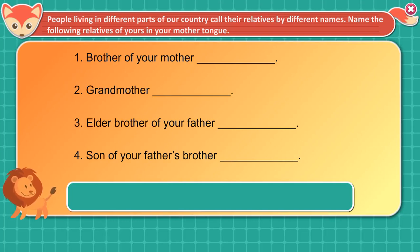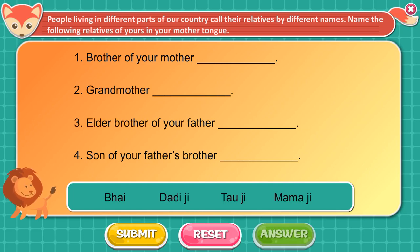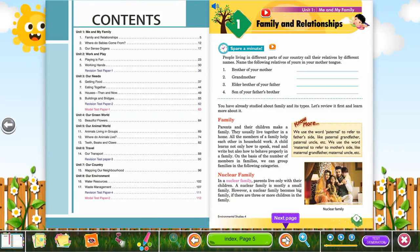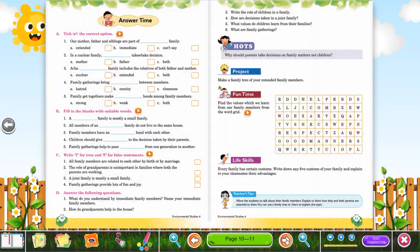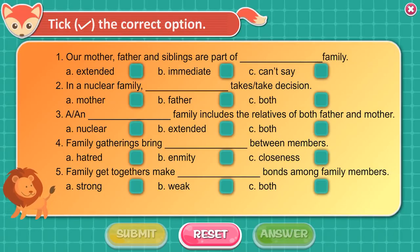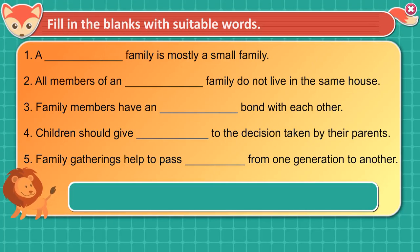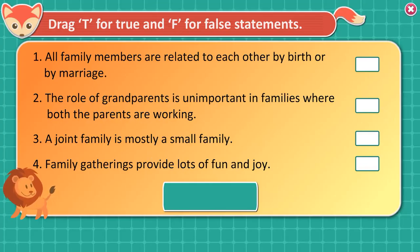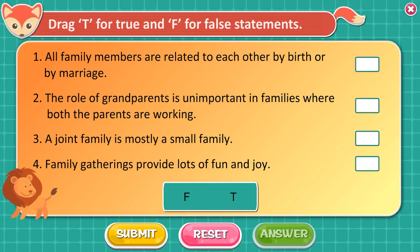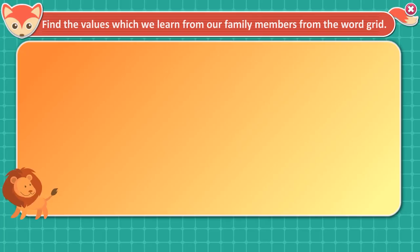People living in different parts of our country call their relatives by different names. Activity: Name the following relatives in your mother tongue. Take the correct option, fill in the blanks with suitable words, drag T for true and F for false statements, and find the values learned from family members in the word grid.